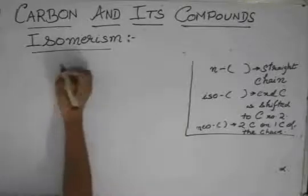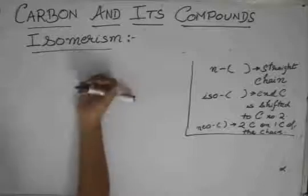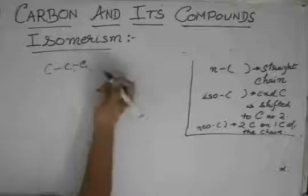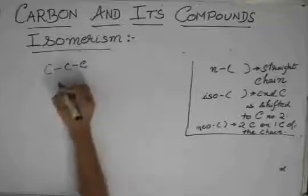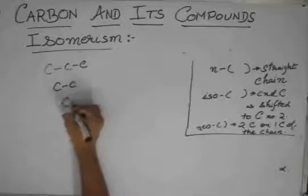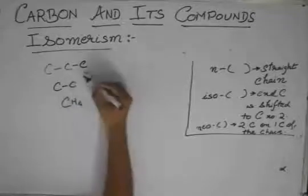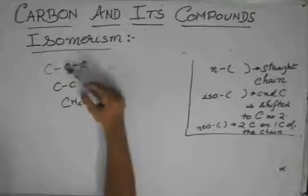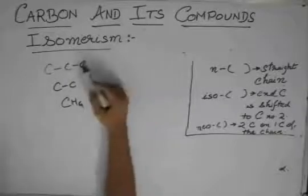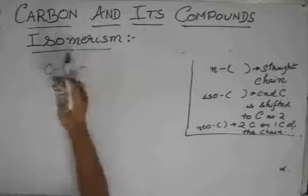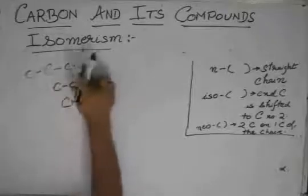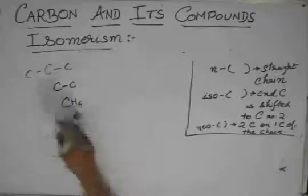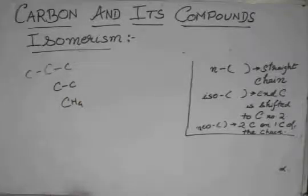And you will be mostly asked butane and pentane. You see that propane cannot have any structural isomers, neither can ethane and methane, of course, cannot have. Because in propane, shift this to this and it remains same. In ethane also, it's the same. And in methane, you have only one carbon, you have no carbon to shift to.